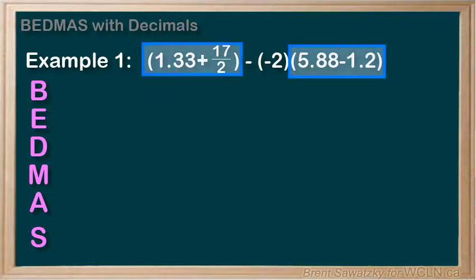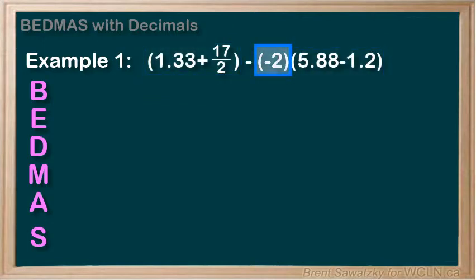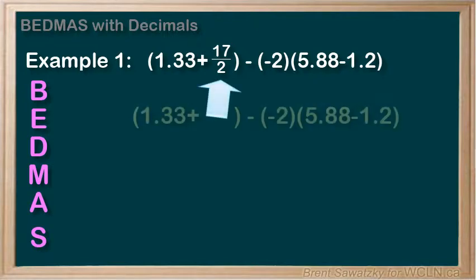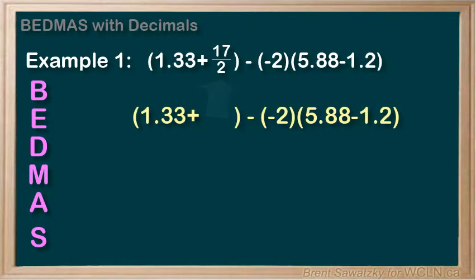We note that we have a couple sets of brackets with operations within them, and one set of brackets to keep track of a negative. Let's aim at the brackets with operations in them. This first one has a division within it, so that'll come next. 17 divided by 2 equals 8.5, and you can try that one in your head.